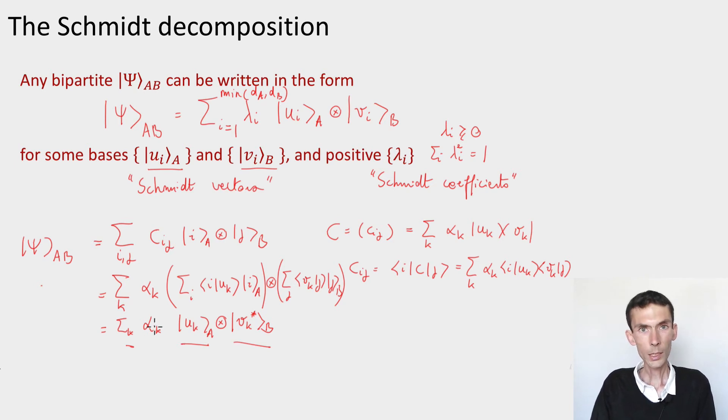Now these coefficients alpha k are the eigenvalues of matrix C. In general, they're complex numbers, whereas I would like my Schmidt coefficients to be non-negative numbers. But there's a simple trick to get around this. Instead of writing the alpha k, which are complex numbers, I can write their absolute value.